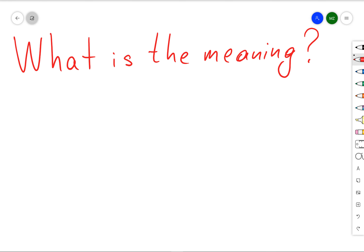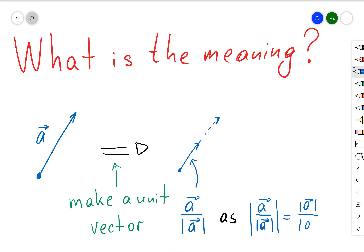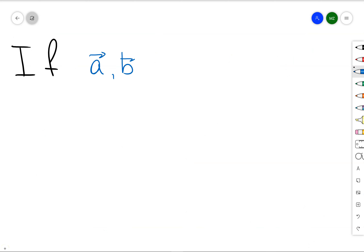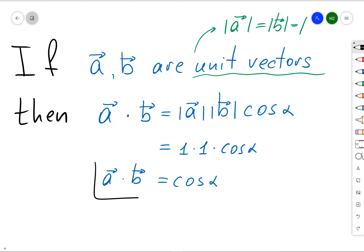Now, what is the meaning of the dot product — what does it measure? To understand this independently of vector length, let's create a unit vector from vector a by dividing a by its magnitude. The magnitude of that unit vector equals the magnitude of a over the magnitude of a, which equals 1. If we take two unit vectors — vectors whose magnitude equals 1 — then a dot b is simply cosine of alpha. To understand this meaning, we need to look at the unit circle.